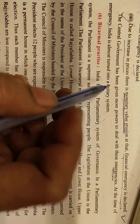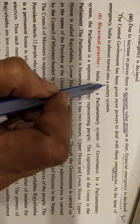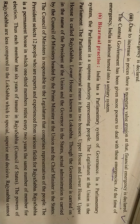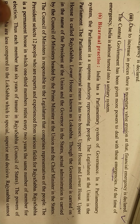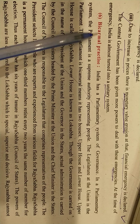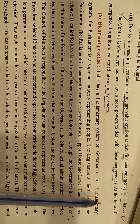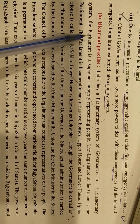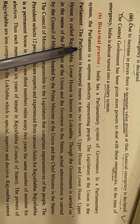Unitary system means India changes from a federal system — where there is both union and state government — to a single system during emergency, where only the union government (Delhi government) works.